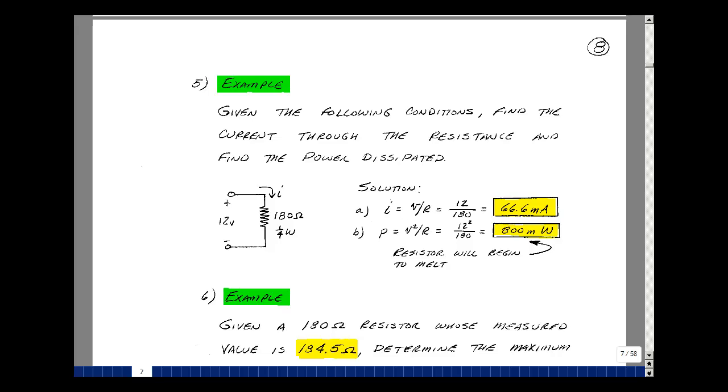Power is voltage times current, I squared R or V squared over R. Let's take V squared over R. So I've got the 12 volts squared, divided by my resistor value of 180, and that gives me 800 milliwatts.